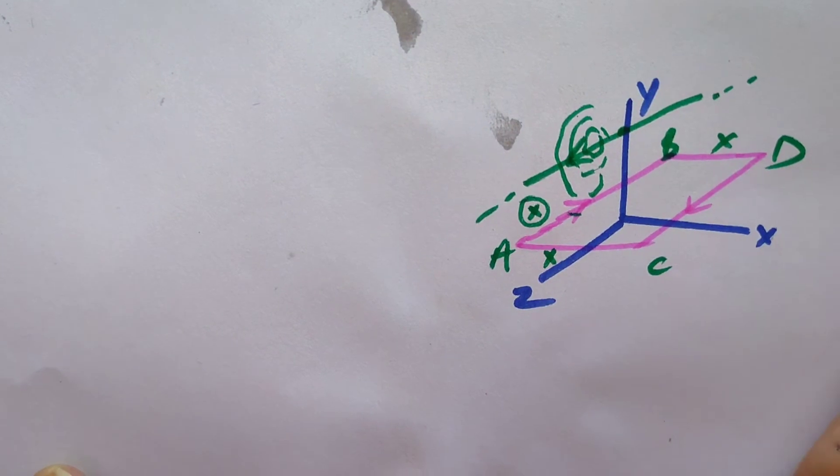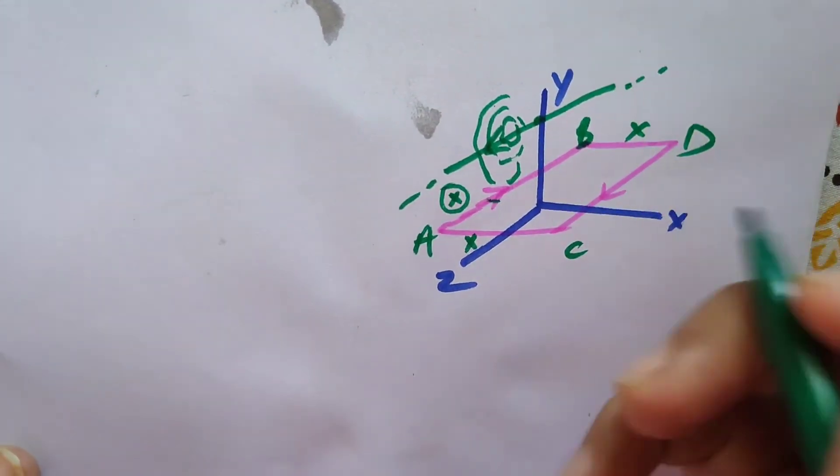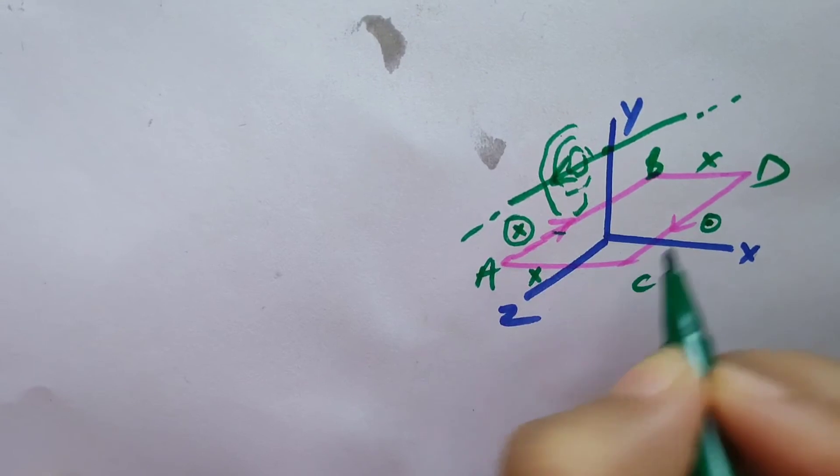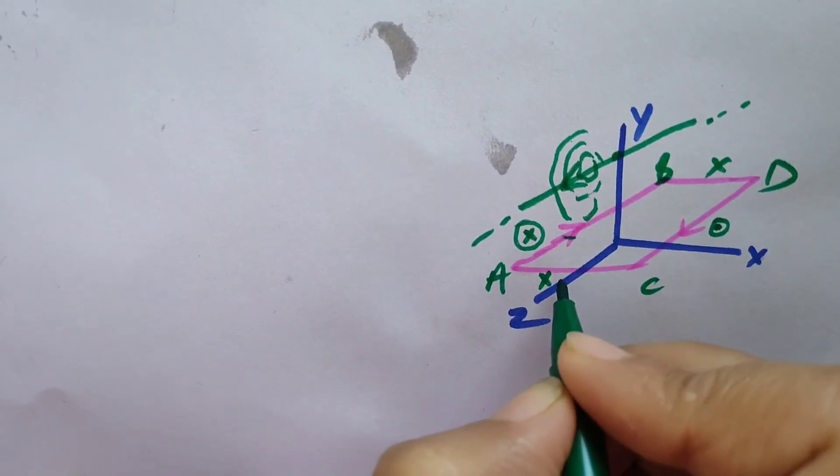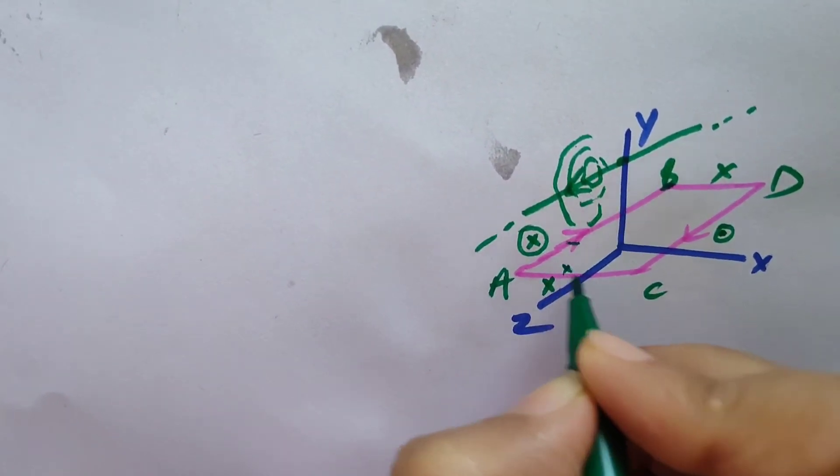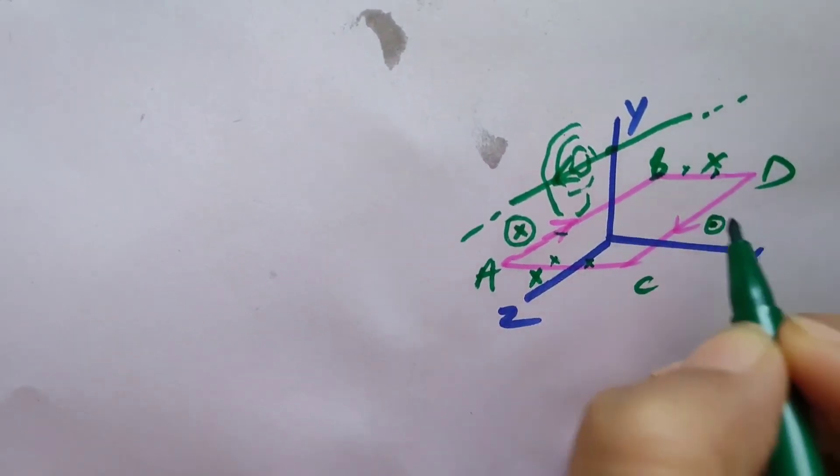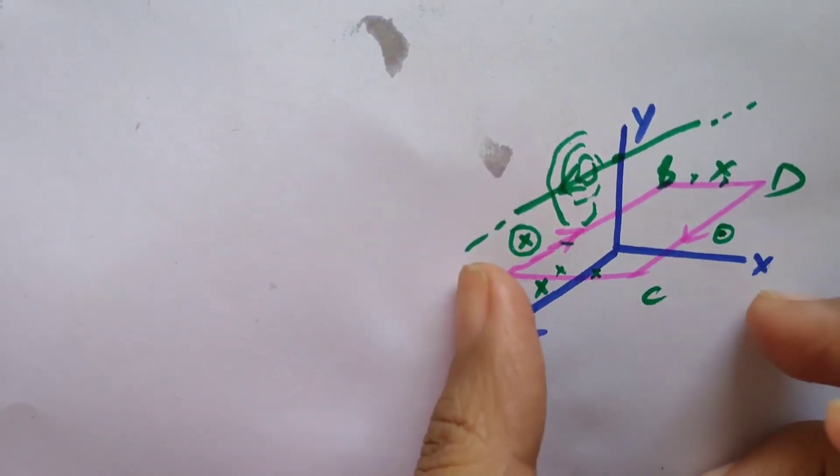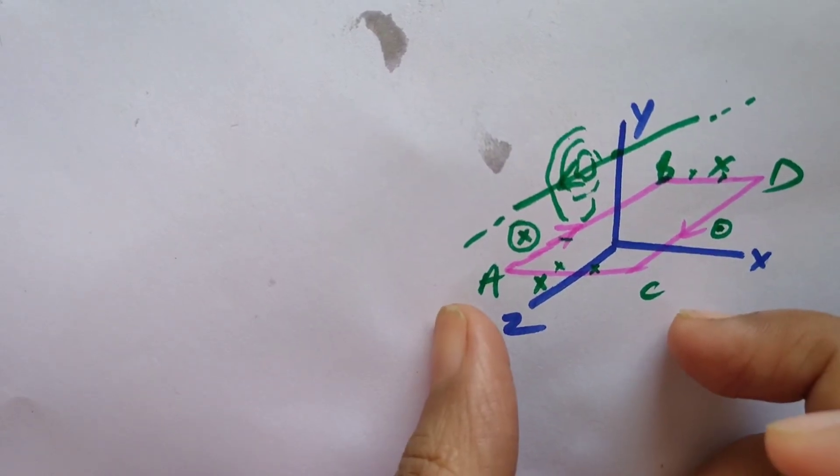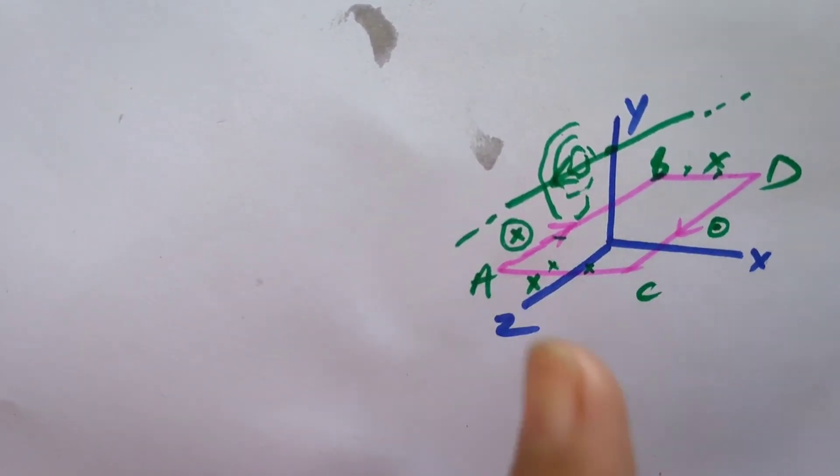For CD this is coming outward, so we will put a dot here. But for AC and BD, equal number of magnetic field lines are going inward and equal number coming outward. So net magnetic field at AC and BD is going to be zero. As magnetic field is zero, then the net force is also going to be zero.